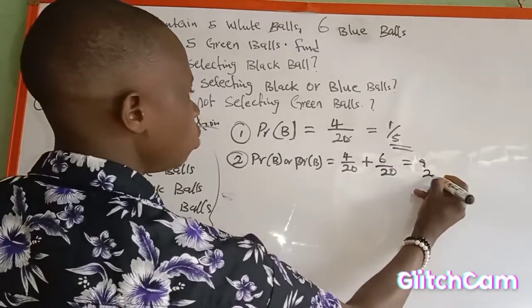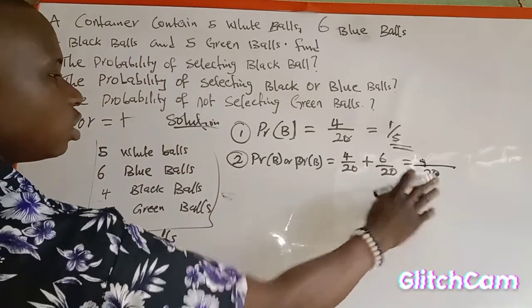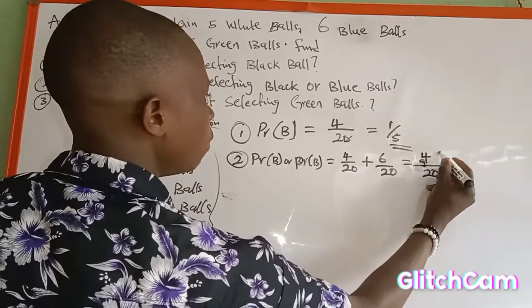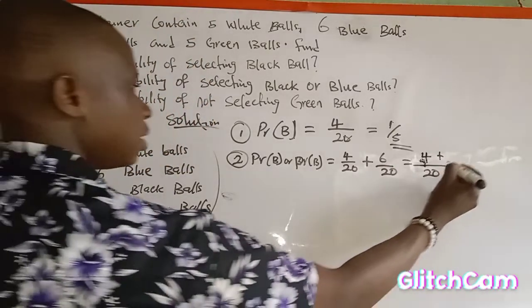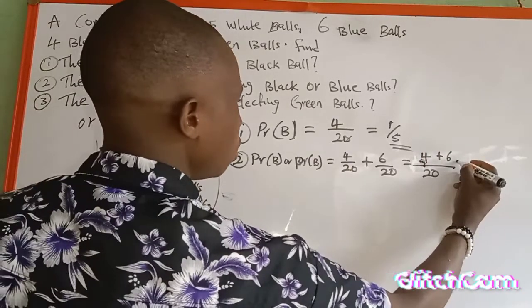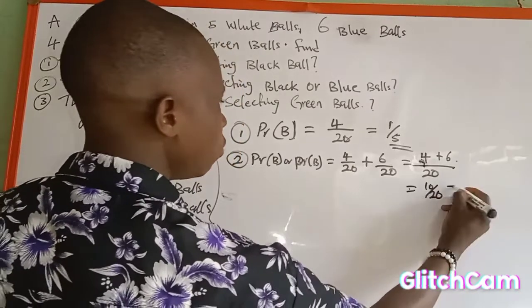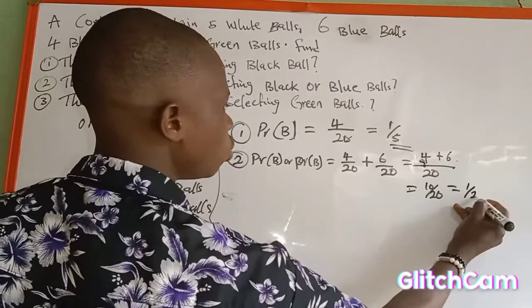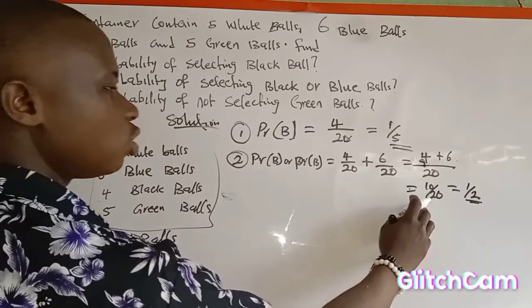Simplifying four over twenty plus six over twenty: the common denominator is twenty. We get four plus six over twenty, which equals ten over twenty. This reduces to one over two, because ten goes into ten one time and ten goes into twenty two times. So the probability of selecting black or blue is one over two.